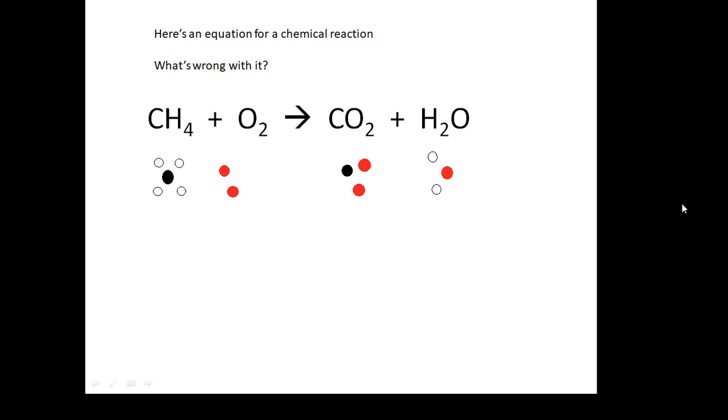Here's an equation for a chemical reaction: methane plus oxygen goes to carbon dioxide plus water. What's wrong? It isn't balanced. You need to have the same number of atoms on each side of the equation. Now it's balanced - one carbon on either side, four oxygens on either side, four hydrogens on either side.